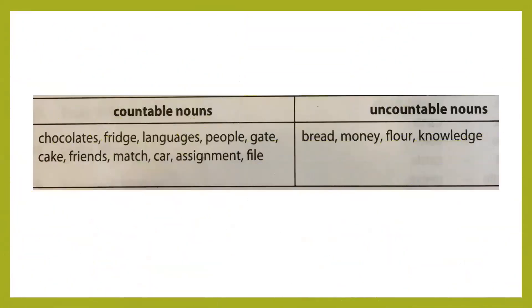Take a photograph. The countable nouns we can count on our fingers are: chocolates, fridge, languages, people, gate, cake, friends, match, car, assignment, and file. The uncountable nouns we cannot count are: bread, money, flour, and knowledge. Please take a screenshot of this slide and write the answers with pen in your grammar workbook.